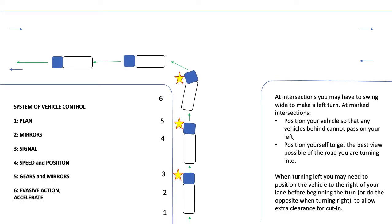Let's take a look at that in a plan view setting. The steps in the system of vehicle control: Step one, plan your corner. Number two, mirror check so you have an awareness of what's coming up from behind, if anything. Number three, indicate with the left indicator.